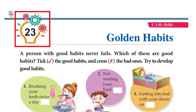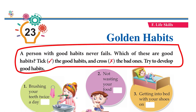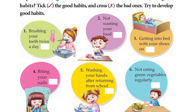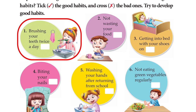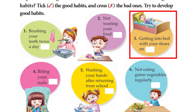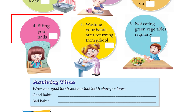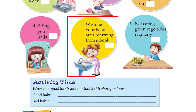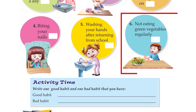Chapter 23: Golden Habits. A person with good habits never fails. Take the good habits and cross the bad ones: brushing your teeth twice a day — tick; not wasting your food — tick; getting into bed with your shoes on — cross; biting your nails — cross; washing your hands after returning from school — tick; not eating green vegetables regularly — cross.